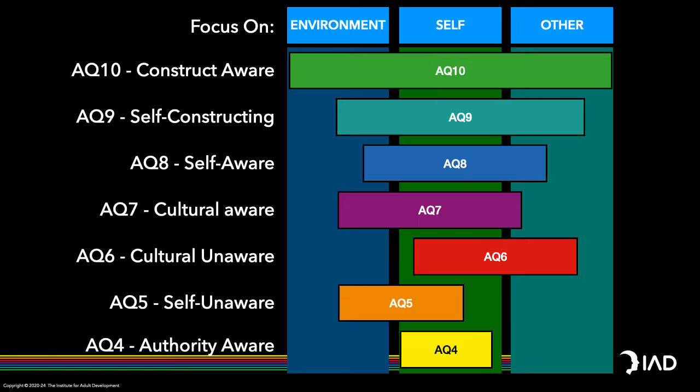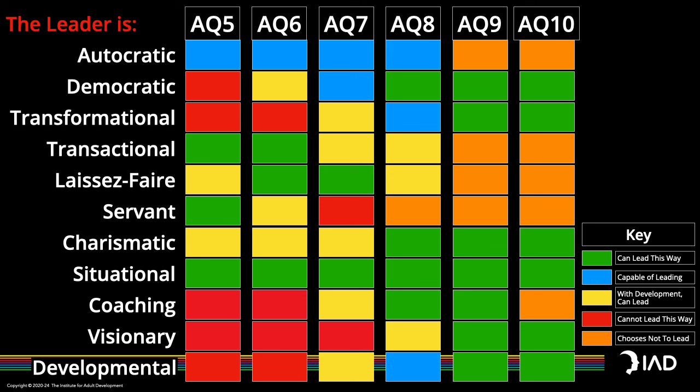From a developmental level perspective, the variety of leadership theories we teach at university will or will not be used by leaders at different levels. When I teach about leadership, I emphasise that none of the existing models really take into account the levels of vertical development. A leader at AQ9 is capable of choosing not to do something, whereas a leader at AQ5 — usually a self-made business — is not capable of choosing not to do something. We then discuss the ramifications of these perspectives on business and employee outcomes.